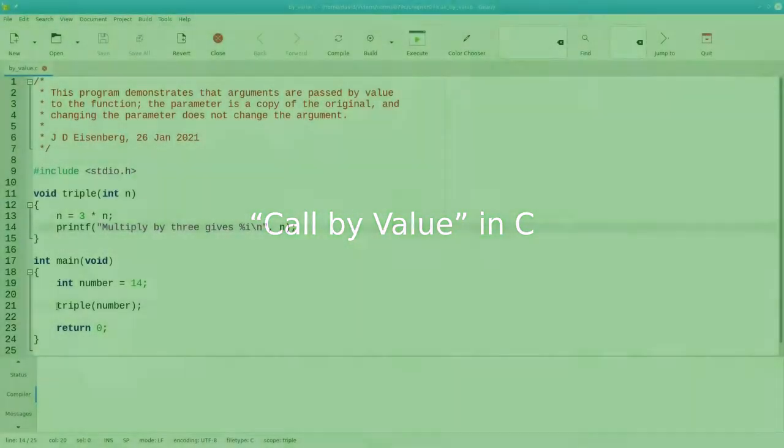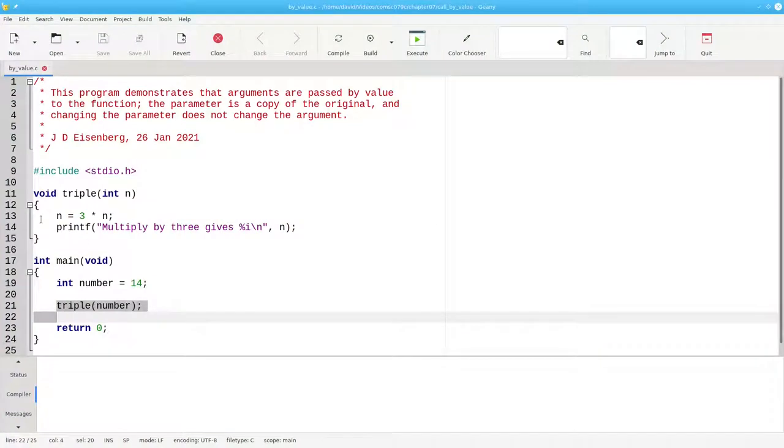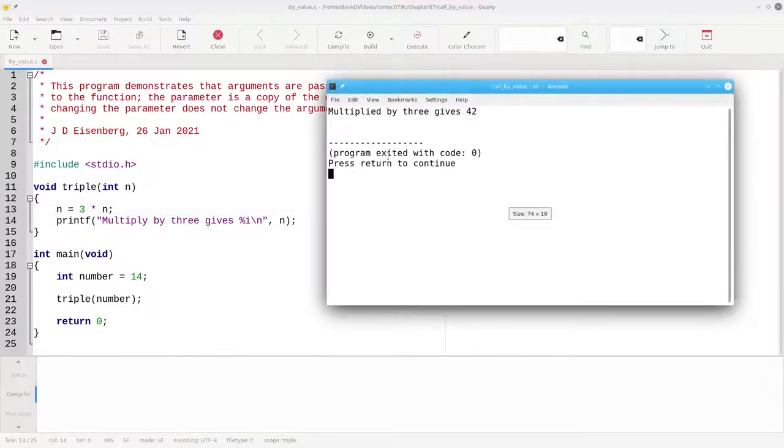Consider this program, which calls a function that multiplies a number by 3 and prints the result. Let's run this program and we find out that 14 times 3 is 42.